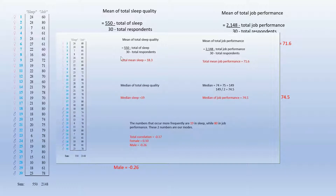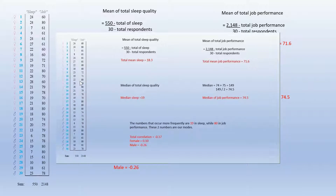We got 18.3 as the mean of sleep. For the median, it will be the mean of the two middle sorted numbers, as our given data is even. We have both 19 in the middle, so our median is 19.